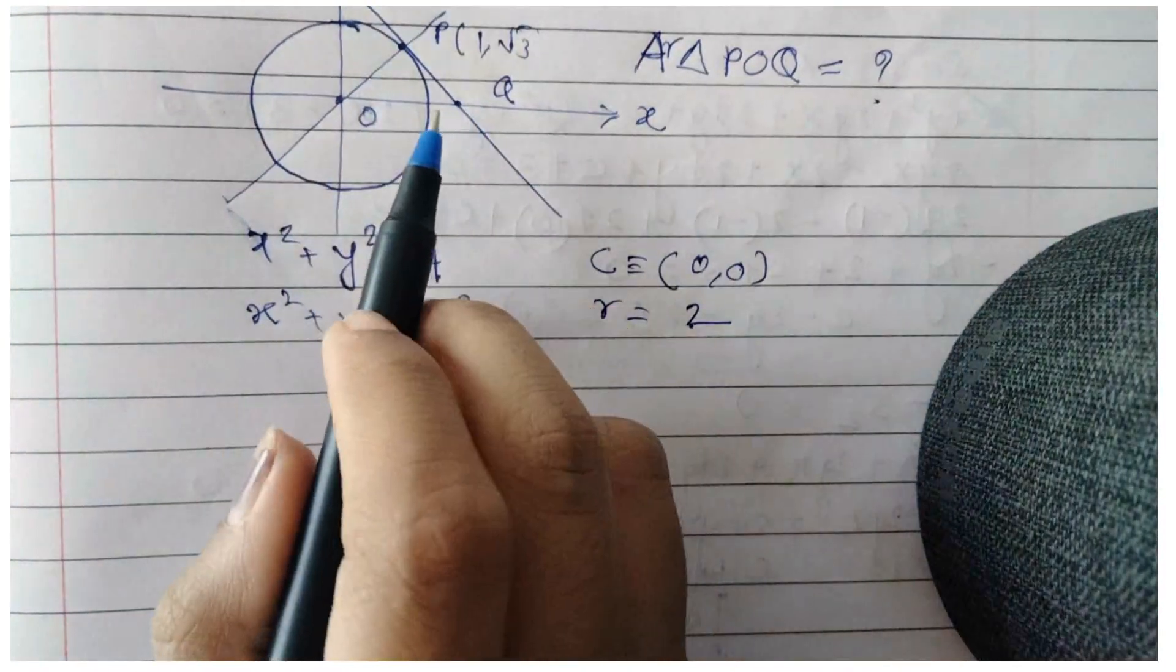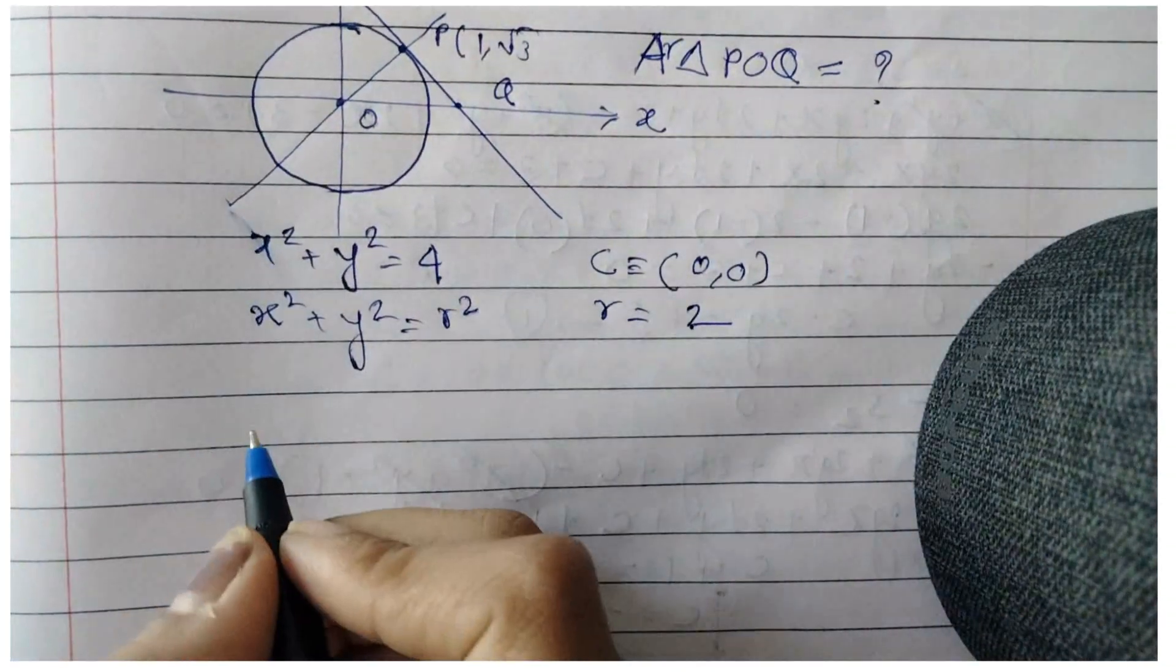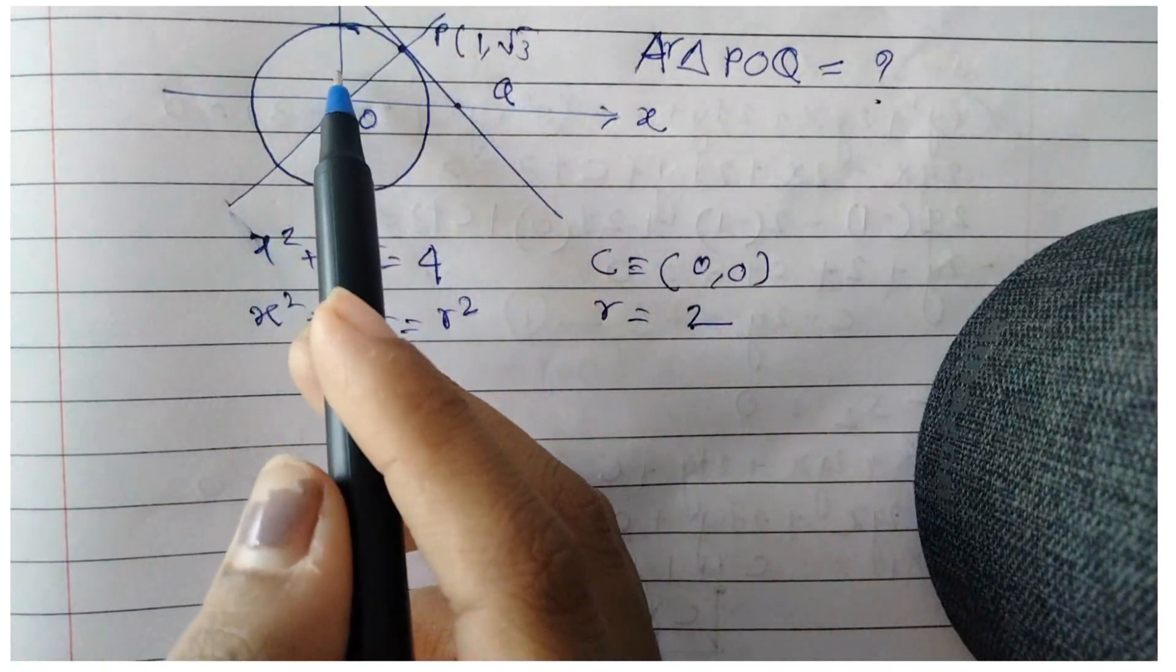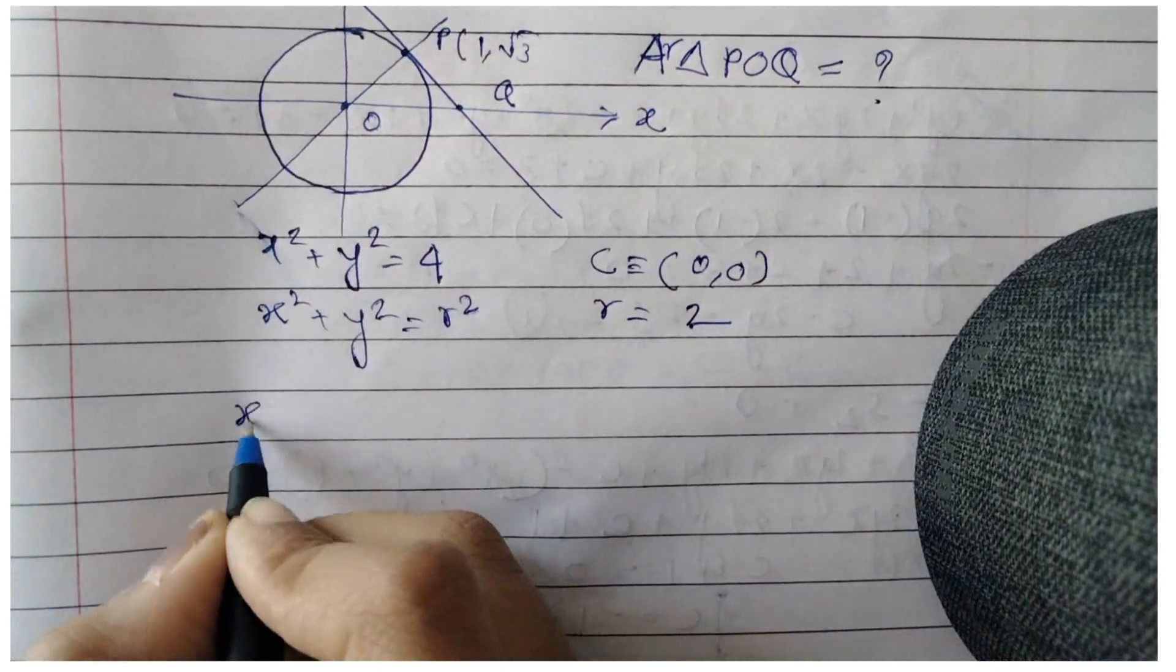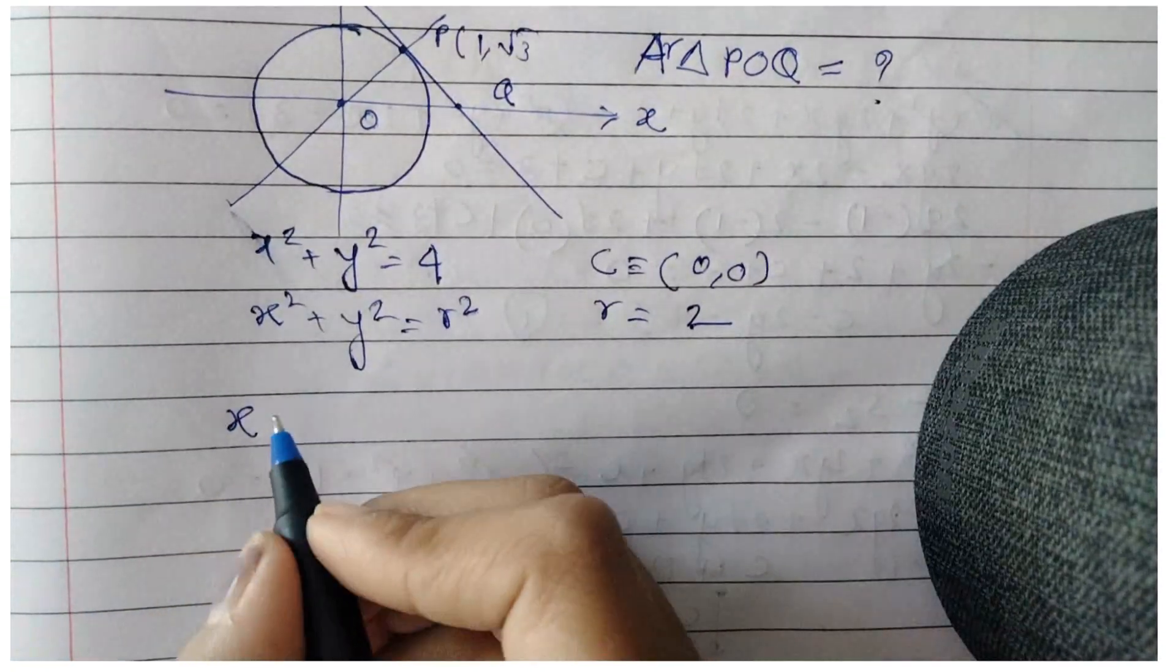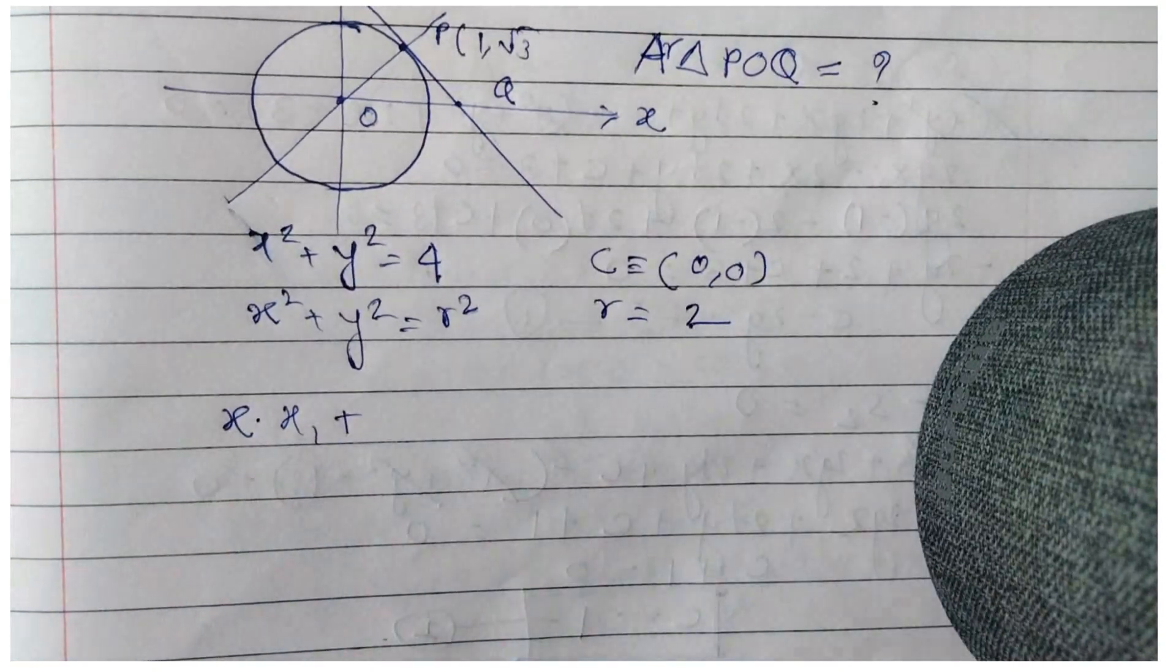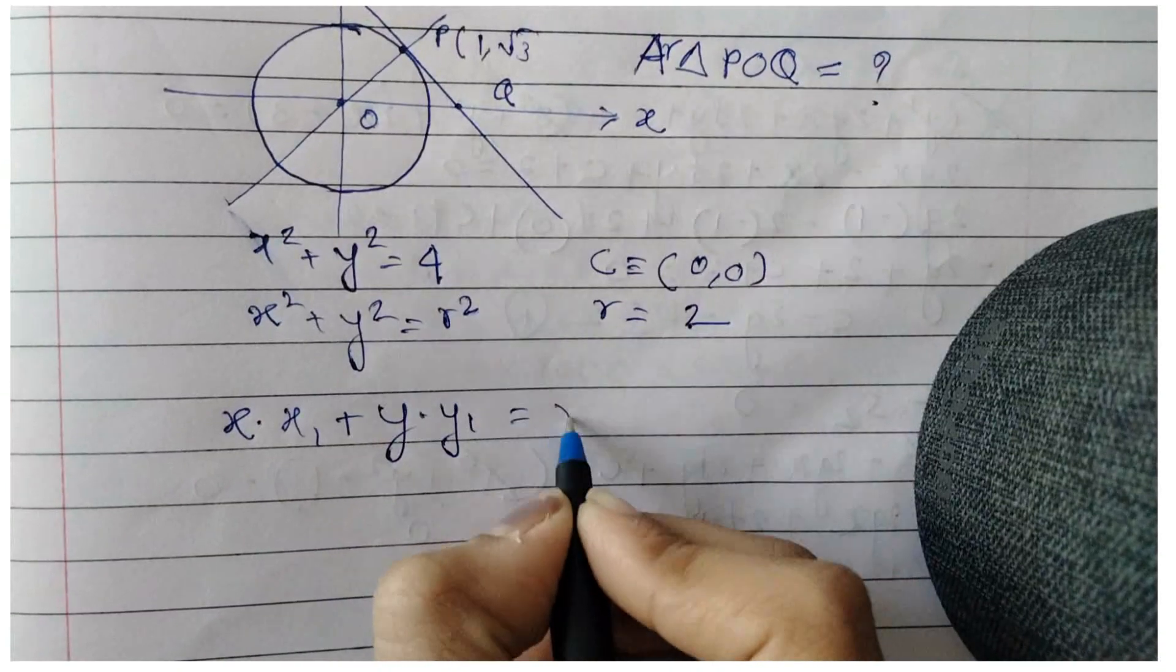To find point Q, we will first write the equation of the tangent, then substitute y = 0 since the point lies on the x-axis. The equation of the tangent can be formed using the formula: x·x₁ + y·y₁ = r².